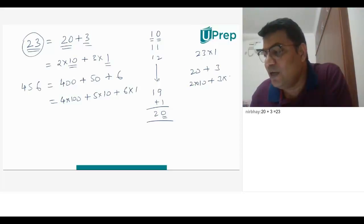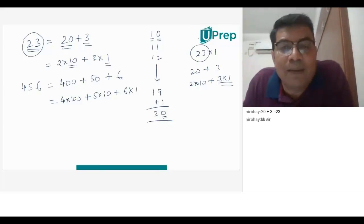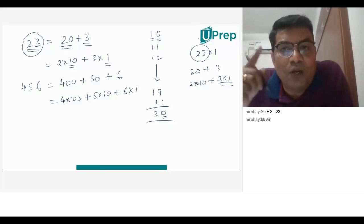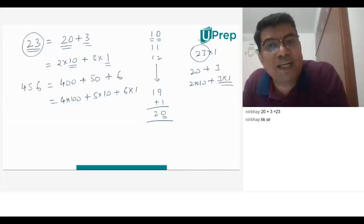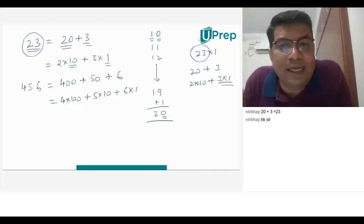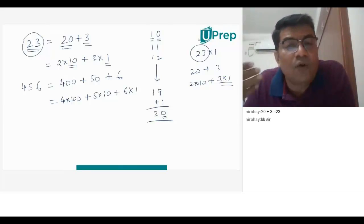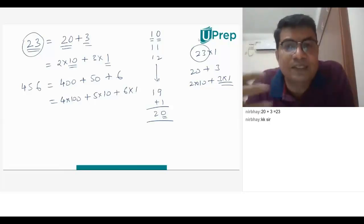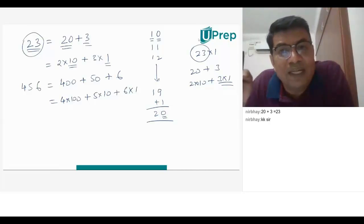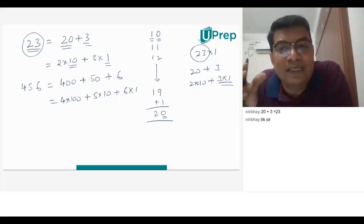23 is also a counting number like 1, 2, 3, and so on. When we have 23 units of 1, that is 23. But in a number system, the mathematicians — when they built this number system as a concept — they made 23 as 20 plus 3. Basically, 20 is 2 tens and 3 ones.